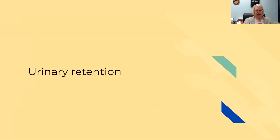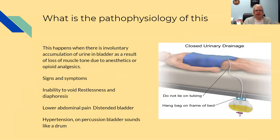Urinary retention is another very common complication after surgery. It occurs when there is an involuntary accumulation of urine in the bladder as a result of decreased muscle tone due to anesthetics or opiate analgesics. Signs and symptoms are the inability to void, restlessness and diaphoresis, lower abdominal pain, a distended bladder, hypertension, and on percussion the bladder sounds like a drum.